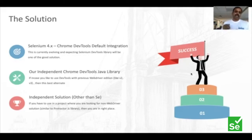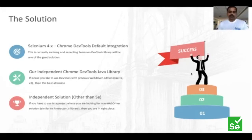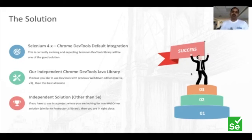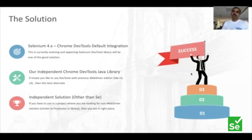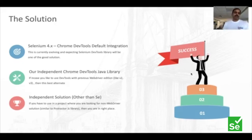What we did is build an independent Chrome DevTools Java library, which we've been using in our work. The advantage when you use our independent library is that it works with Selenium 2 or Selenium 3 — if you couldn't upgrade to Selenium 4 yet, and you still want to integrate with DevTools, our library gives you that option. It can also give you an option of an independent solution where you do not want to use Selenium WebDriver to talk to a browser at all, similar to what Puppeteer does.